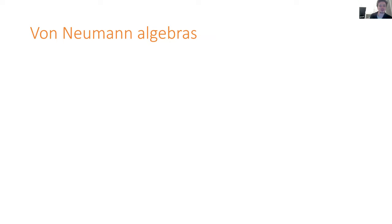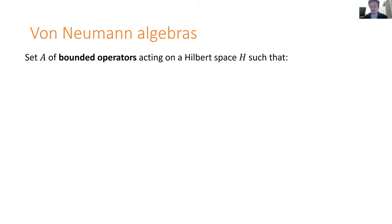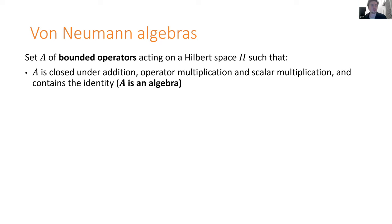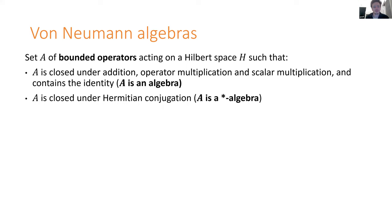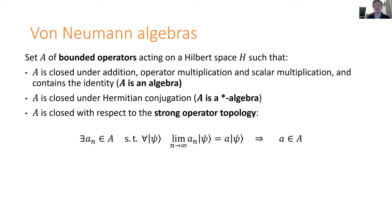So let's start with a high-level mathematical overview of what these von Neumann algebras actually are — they're going to be the heart of this whole talk. Roughly, a von Neumann algebra is bounded operators acting on a Hilbert space. In an infinite dimensional Hilbert space, operators need to be bounded to be well-defined for all states; this makes them a lot simpler to talk about. We want this set to form an algebra: if you add things in, they should stay in; you should be able to multiply them; and it should contain the identity. The algebra should be closed under Hermitian conjugation.